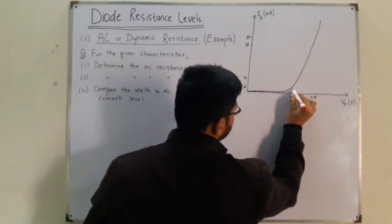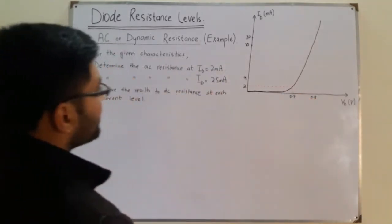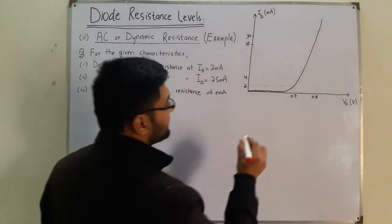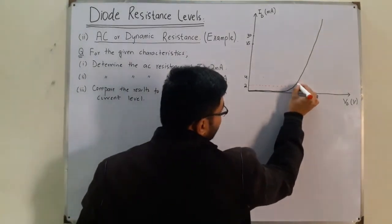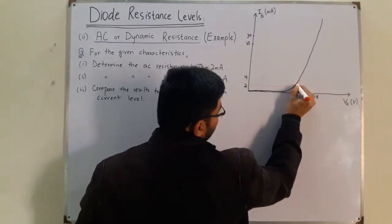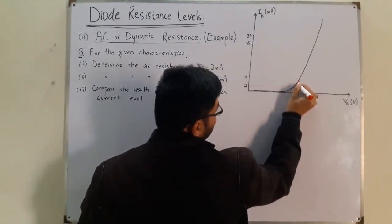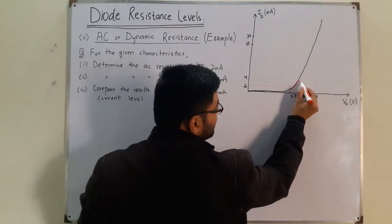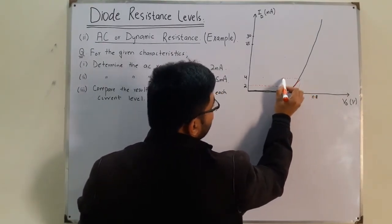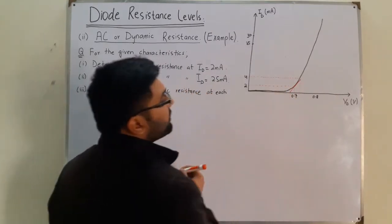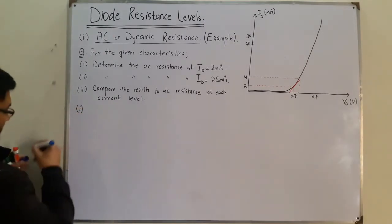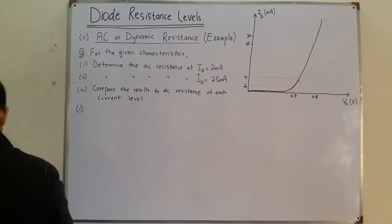At 2 milliampere, the voltage V is equal to 0.7. Now what we do is draw a tangent line. So this is the tangent line. I've got two more points — this one and that one. At this point, I have a value of VD and the value of current ID is 4. The red color represents the tangent line.